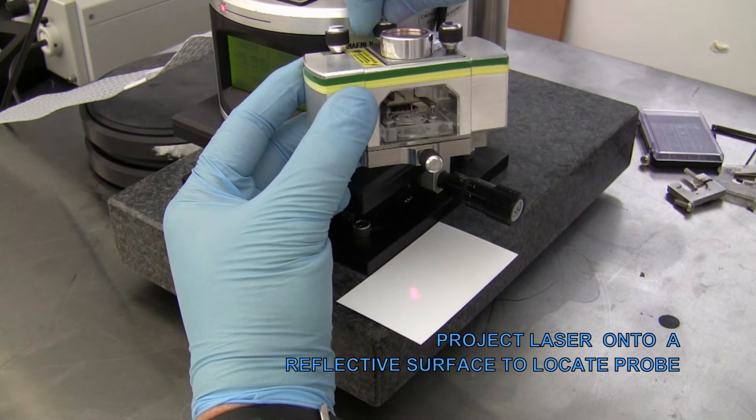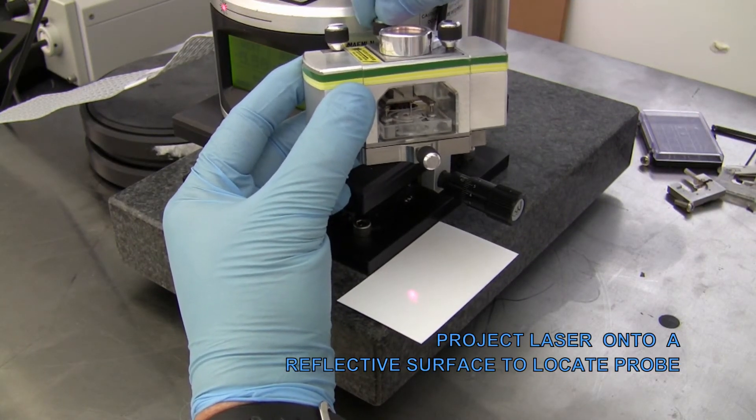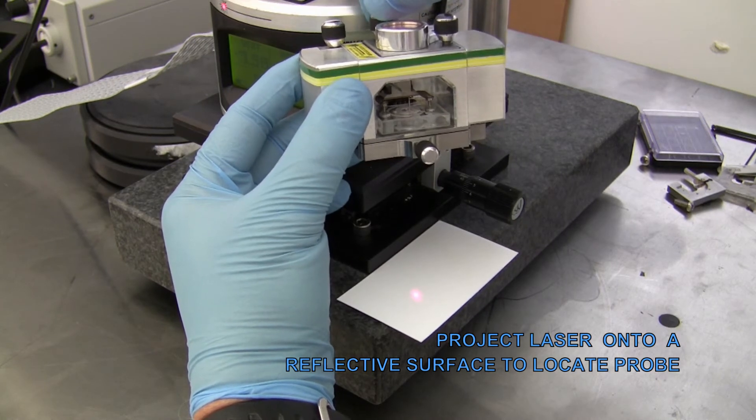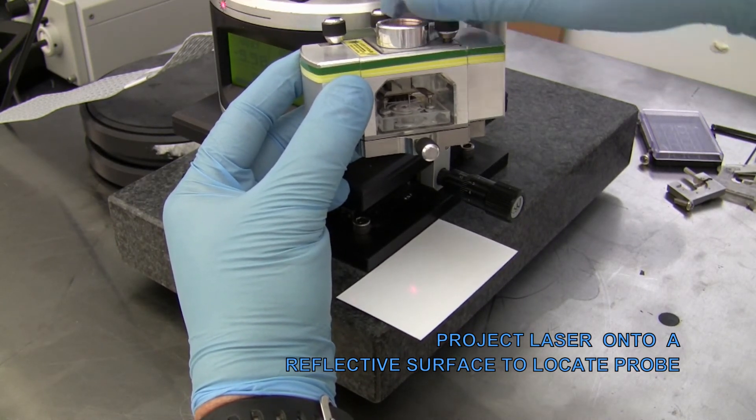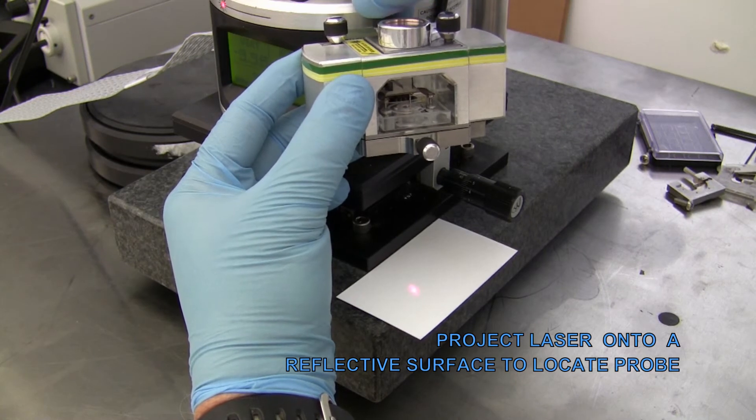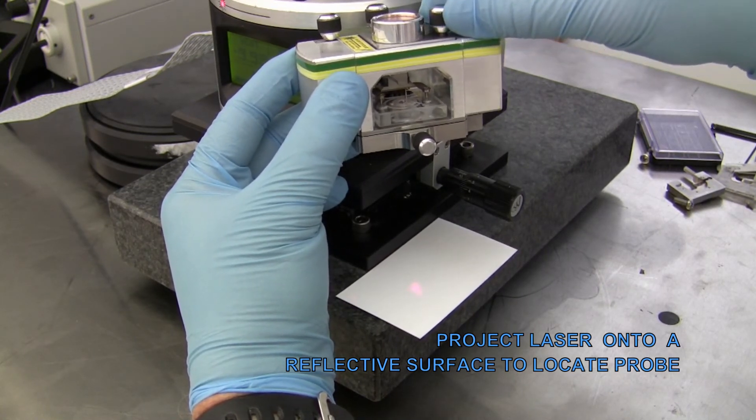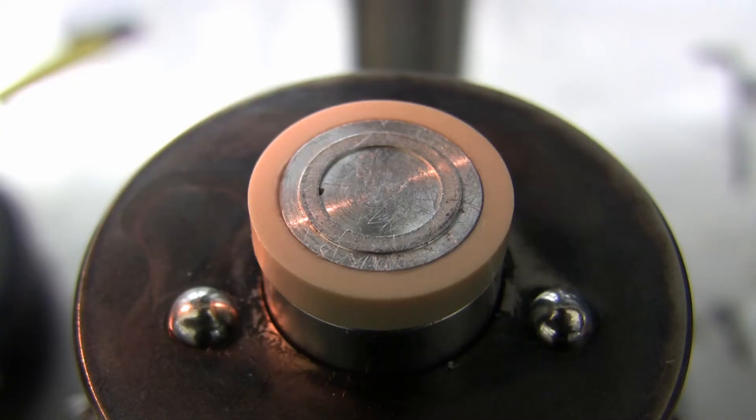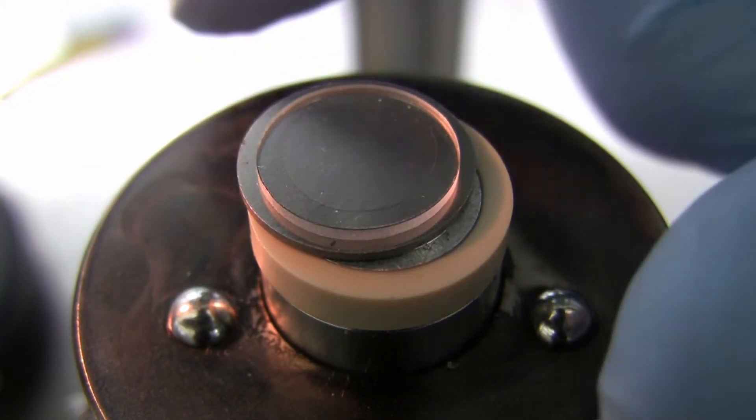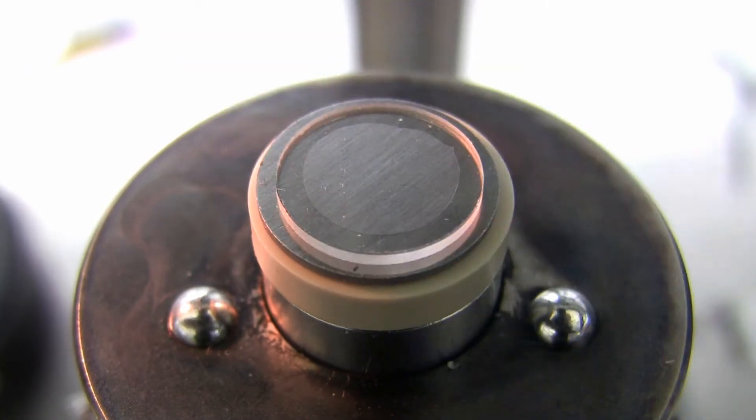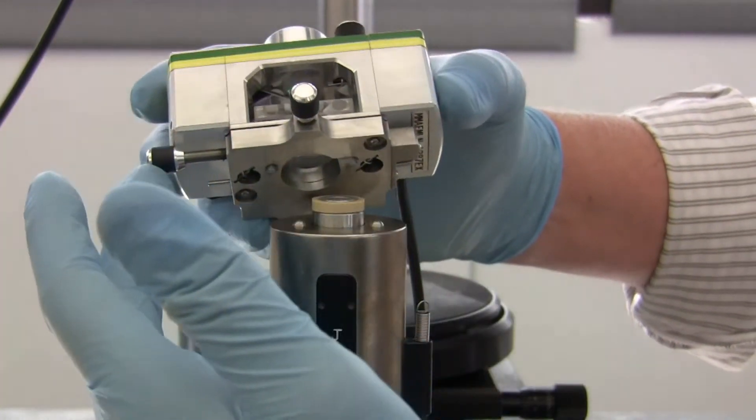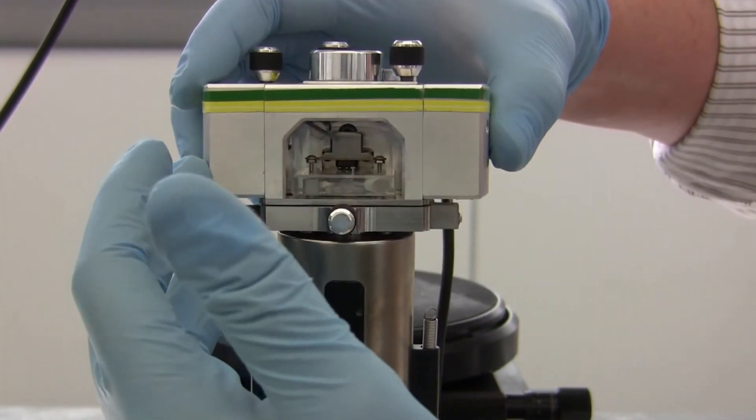At this point, it may be useful to perform a preliminary alignment of the laser using the shadow method to find the probe. Then place the sample disk onto the scanner's magnetic mount. Place the head onto the scanner body and attach the two tension springs.